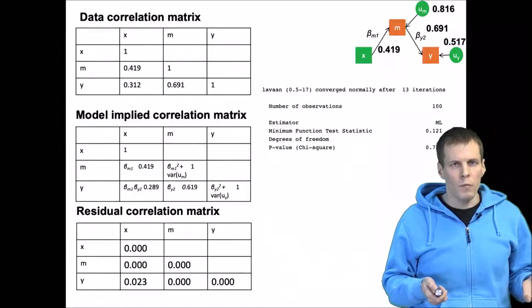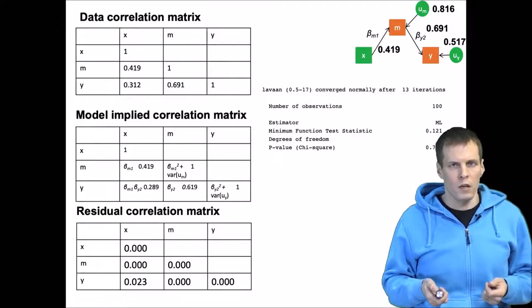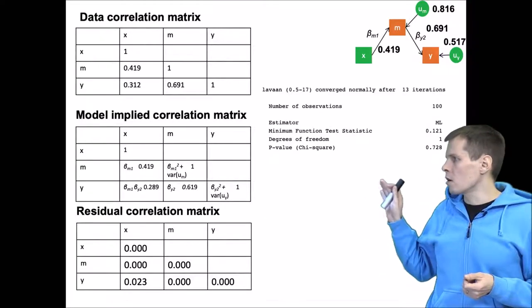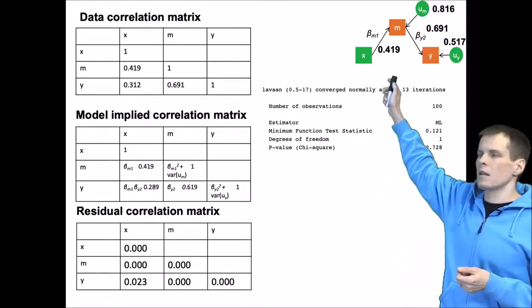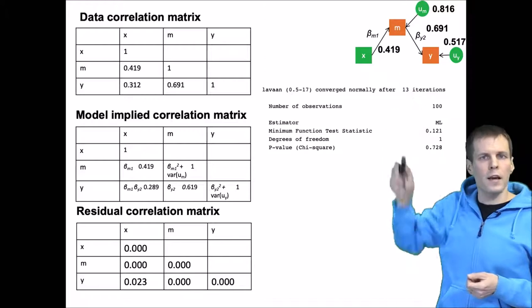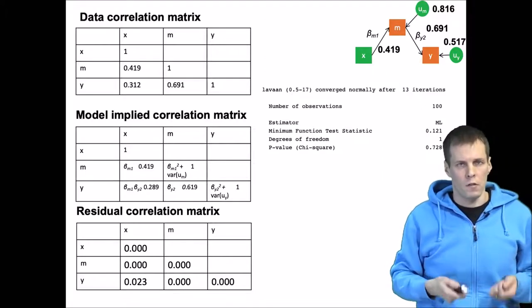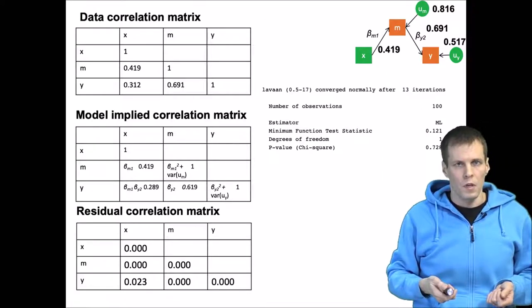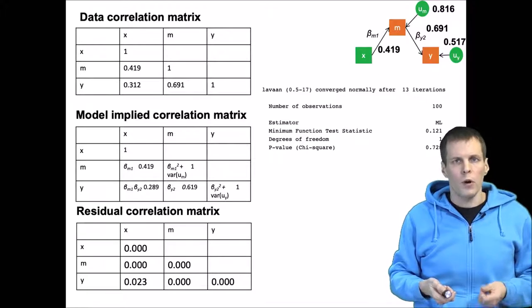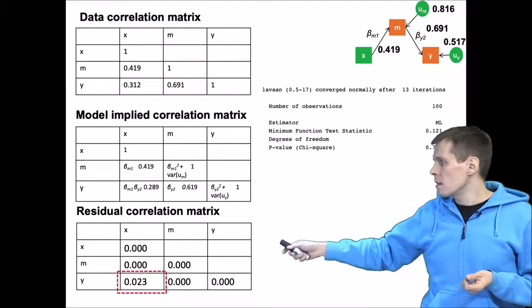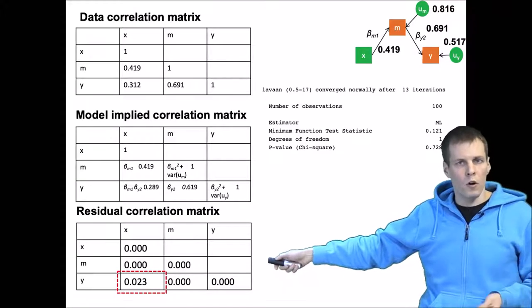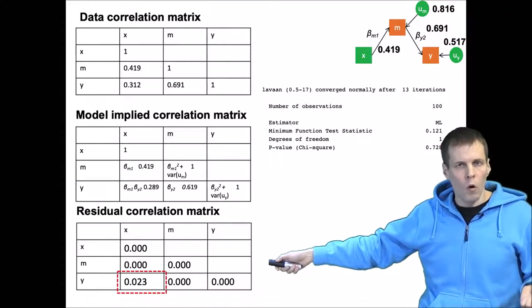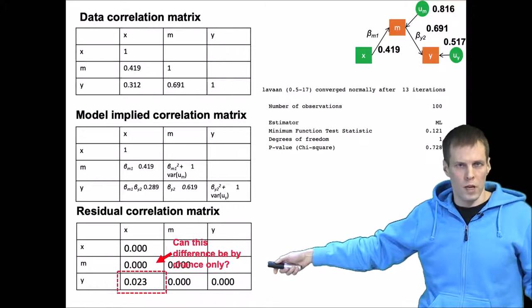Let's take a look at the simple mediation model from my mediation video. In the mediation model, what we are testing is basically does this mediation model fully explain the covariances or correlations in the data. More specifically, we are asking is this small correlation here an indication of model misfit or is it there just because of chance only.